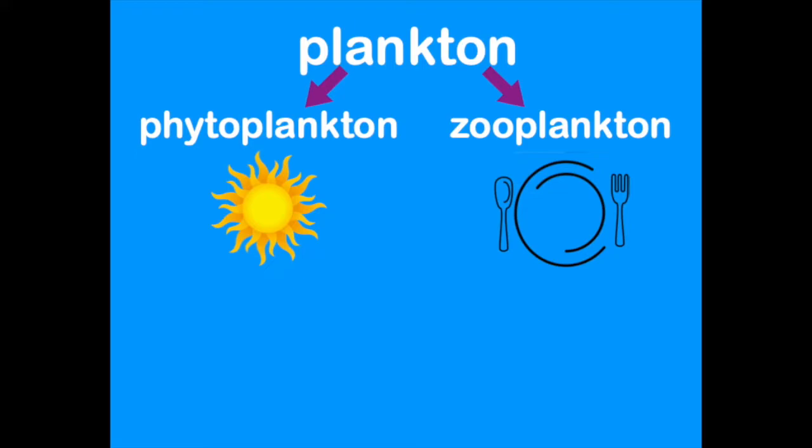Zooplankton, on the other hand, have to consume their food, just like animals. Some zooplankton are animals and some are not, so for our purposes, we'll just say that they are animal-like. You can remember this by thinking that animals can be found in zoos.